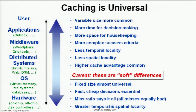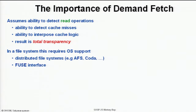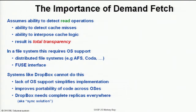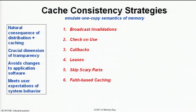One important point is the importance of demand fetch — we assume it's possible to intercept reads and inject code that performs the demand fetch. Unfortunately, if you look at a system like Dropbox, which is very popular and makes a lot of money, it doesn't do that. The price you pay is that some things we take for granted with caching — such as the ability to be very fine-grained about the data you need or the data update you need to propagate — cannot be supported.